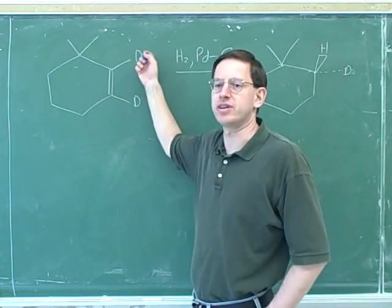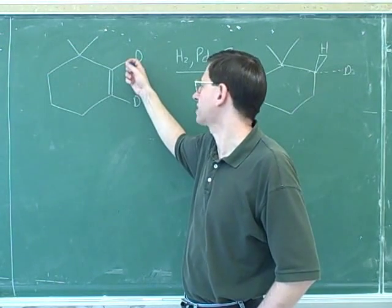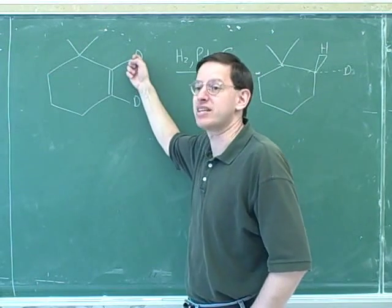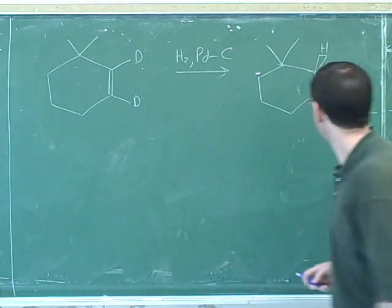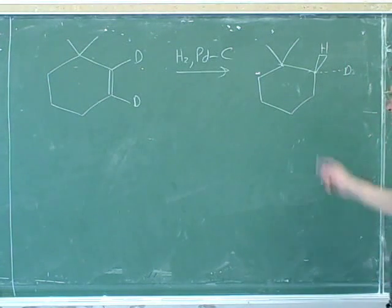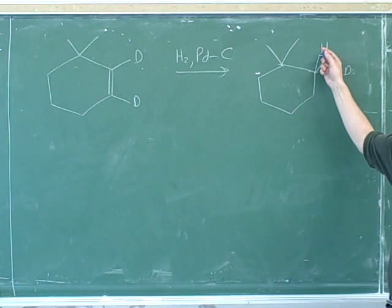Of course, the D here is for deuterium. We should be comfortable now with the idea that deuterium is just an isotope or form of hydrogen. But it's not the same as hydrogen. So this will be a stereocenter, because hydrogen and deuterium are not the same thing.